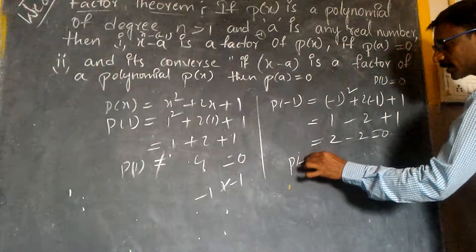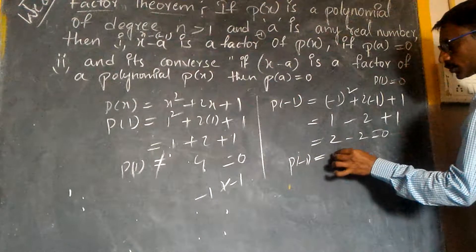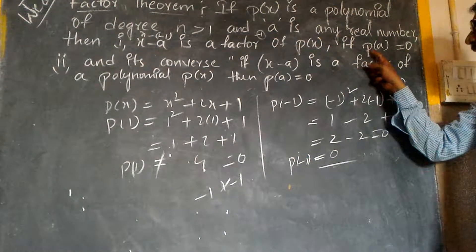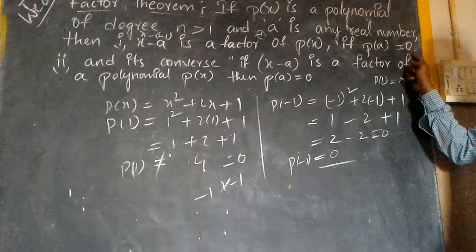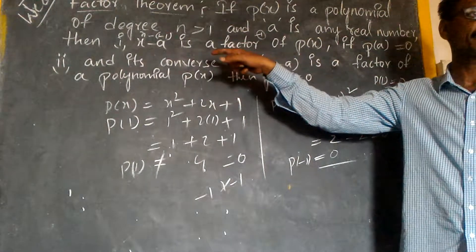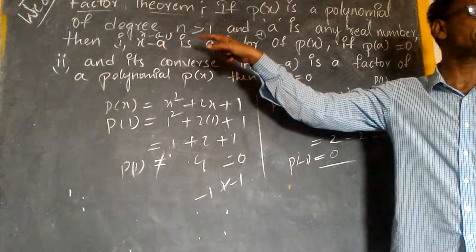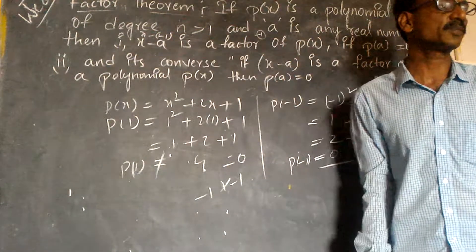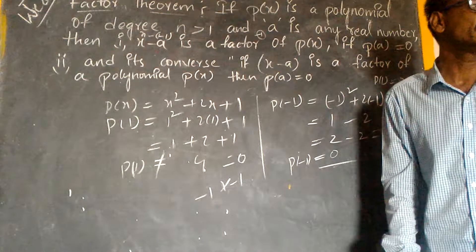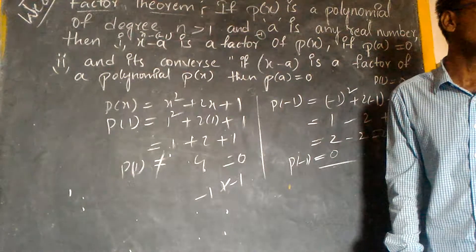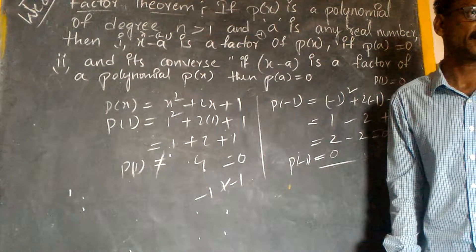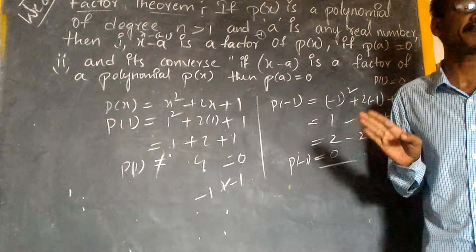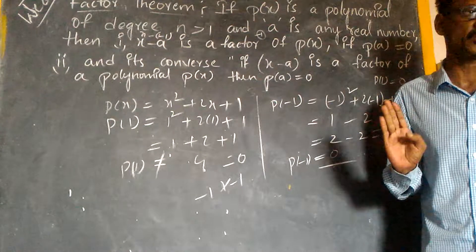So p of minus 1 is equal to 0. Therefore, x plus 1 — because minus of minus gives plus — x plus 1 is a factor of p of x. Is it clear? This is the meaning of the definition.